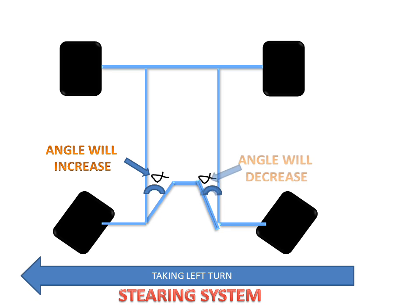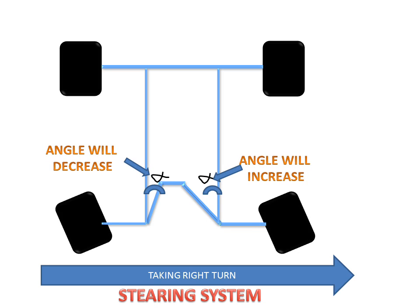So this is the working system of Ackermann steering. The angle will increase or decrease according to the direction of the right and left turn. With the use of these linkages and this angle, we can take turns right and left on the road. Thank you.